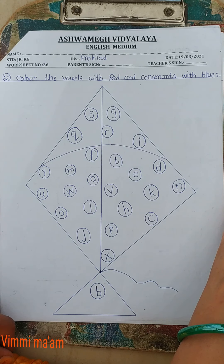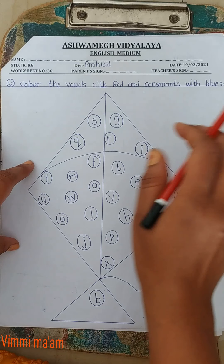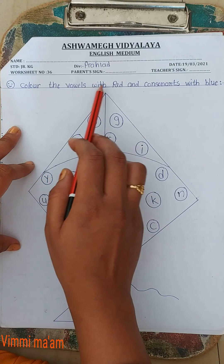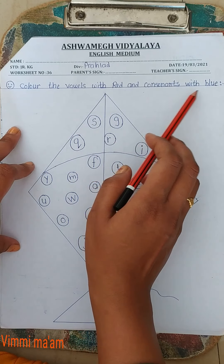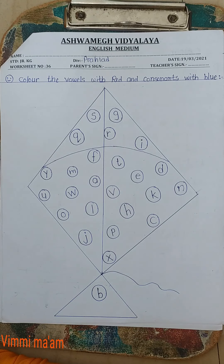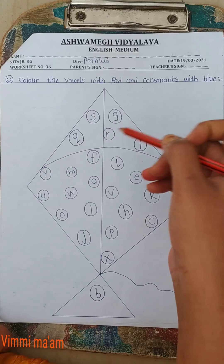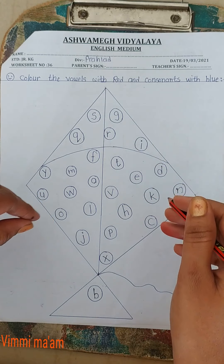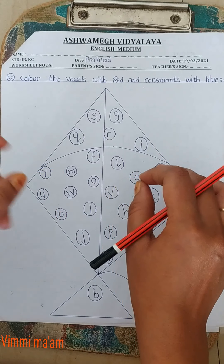So children, take this worksheet. Now look here and listen properly. Which activity is given here? Here, color the vowels with red and consonants with blue. Now what do we do? Vowels with red color and consonants with blue. Here we have vowels and consonants. So we have to color vowels with red and consonants with blue.